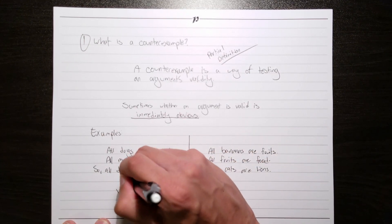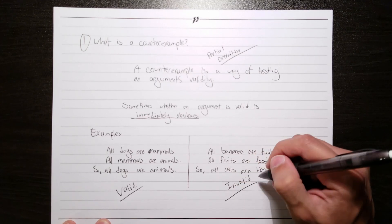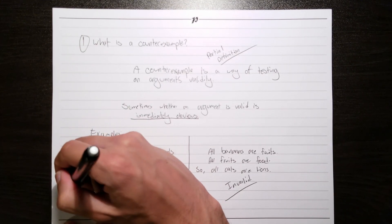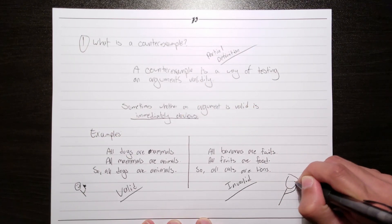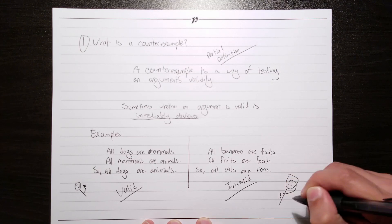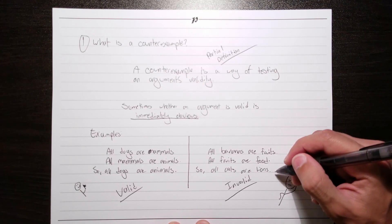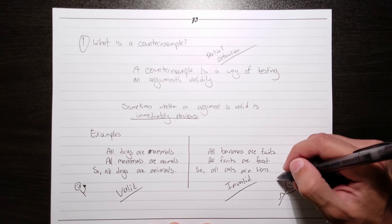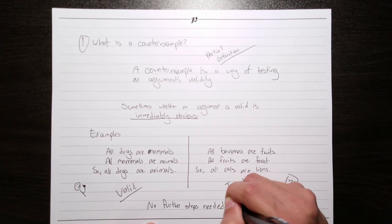It's immediately obvious that the argument on the left is valid, and the argument on the right is invalid. After all, the reasoning in the argument on the left is transparently truth-preserving. Whereas the argument on the right, its premises aren't even relevant to its conclusion. Bananas, fruit, and food don't really have anything to do with cats and lions. The validity of arguments such as these is really obvious, and we don't really need to take any further steps to test these arguments.